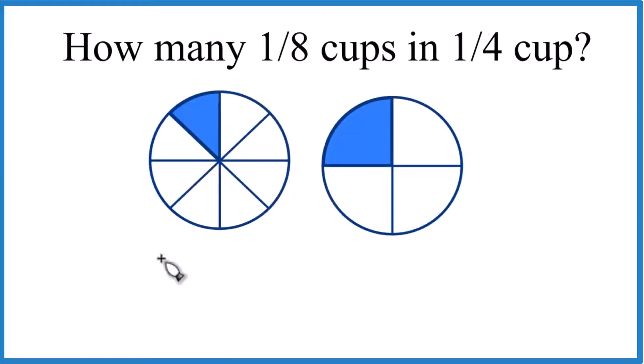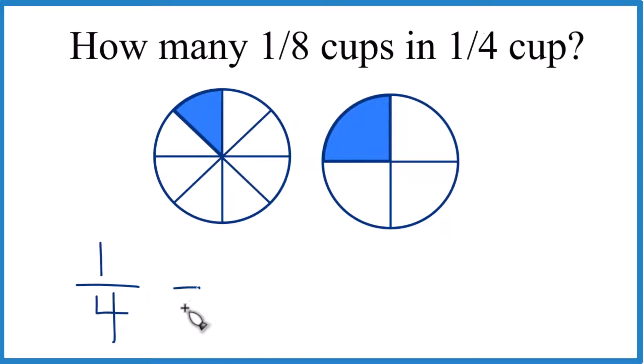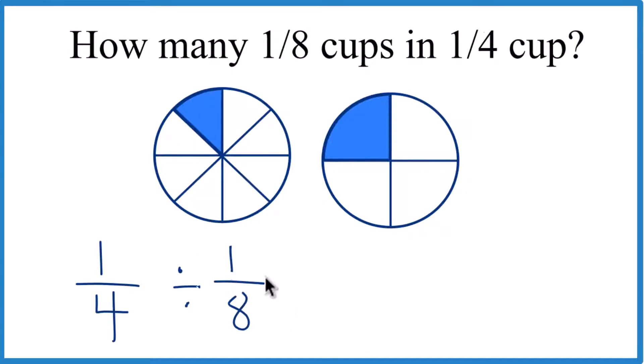What we do is we say we have one-fourth of a cup and we want to know how many one-eighth cups go into that. So we're going to divide that by one-eighth. And when we divide fractions,